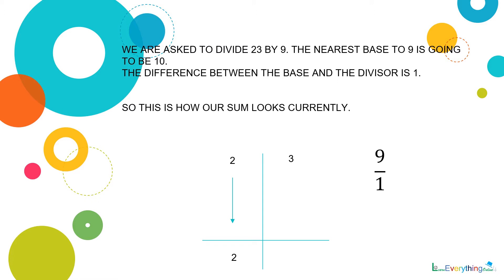So this is how our sum looks currently. The numbers which are to be divided, that is 2 and 3, are separated and written on the LHS and RHS of the sum.